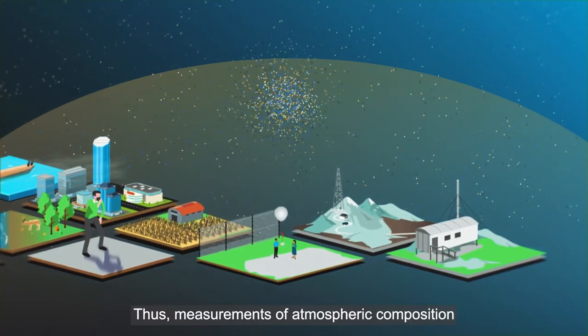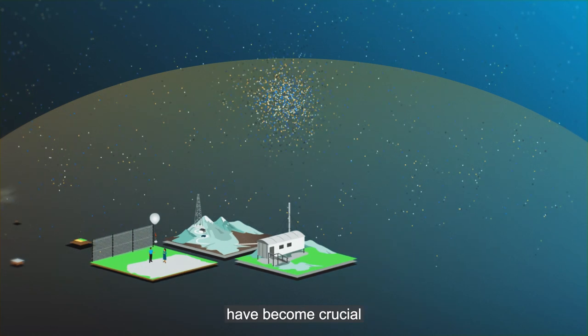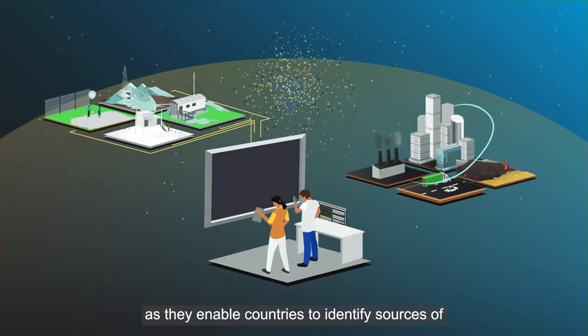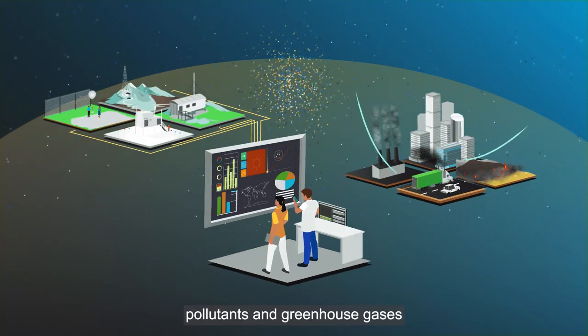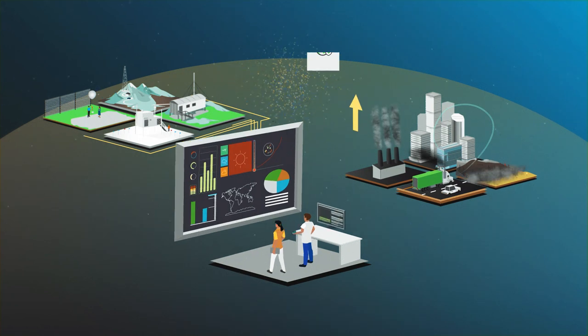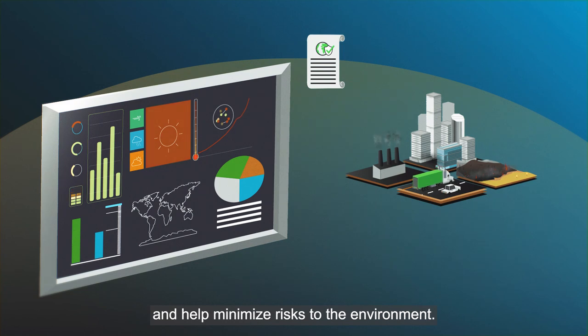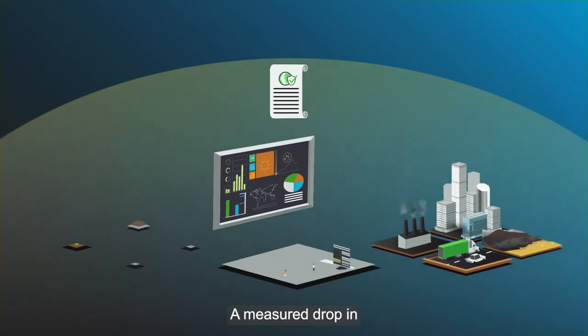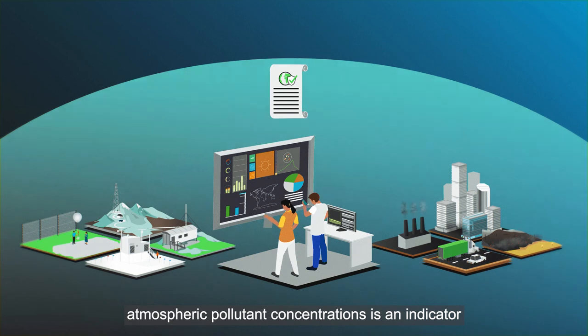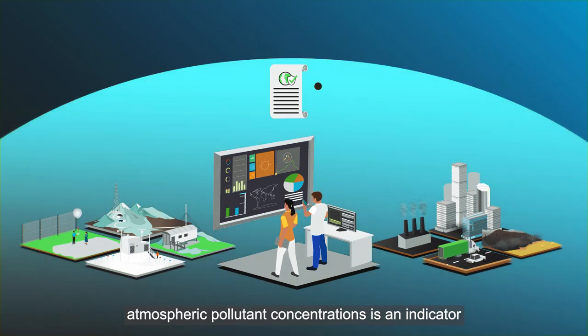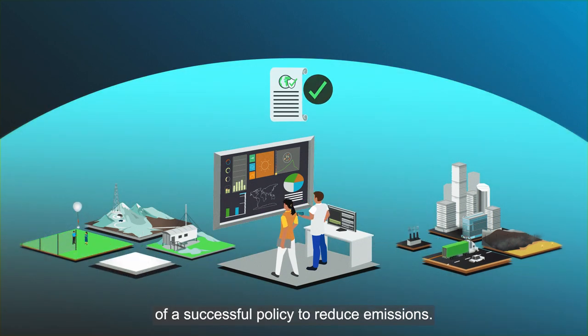Thus, measurements of atmospheric composition have become crucial as they enable countries to identify sources of pollutants and greenhouse gases and to guide effective policies to reduce emissions and help minimise risks to the environment. A measured drop in atmospheric pollutant concentrations is an indicator of a successful policy to reduce emissions.